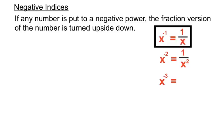And x to the minus 3: the x is being cubed, but it's got a minus index. So to process that, we turn the x over 1 — which is there invisibly — upside down, and keep the index of 3 attached to the x. So it ends up being 1 over x cubed. A negative index kind of turns things upside down, and the x in each case keeps the numeral that was part of the original index.